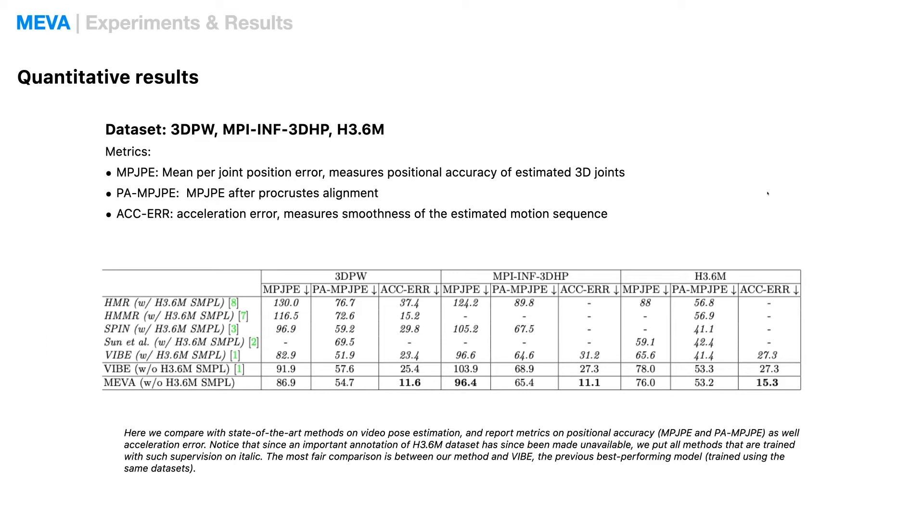We also adopt acceleration error, which measures the smoothness of the estimated human motion sequence. The acceleration is calculated using finite difference. Overall, our method achieves the best acceleration error while remaining competitive in the joint position error.